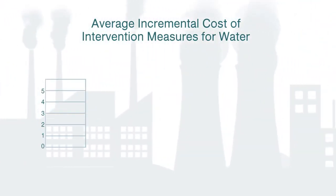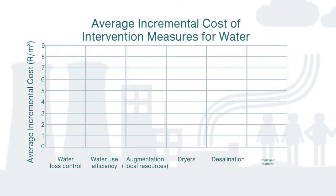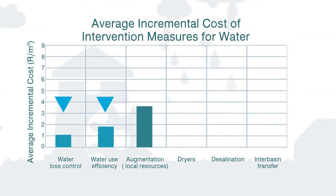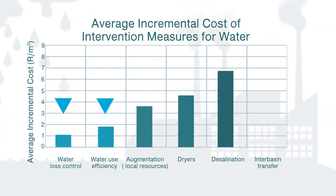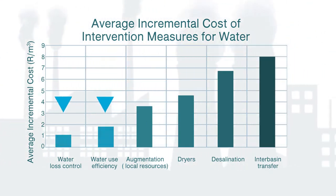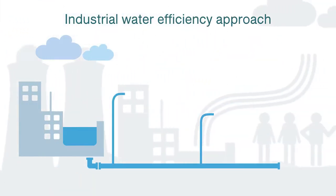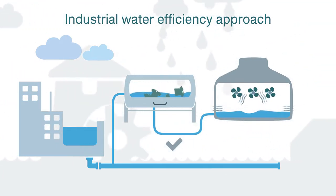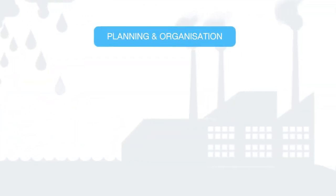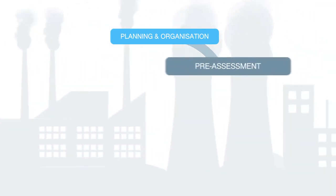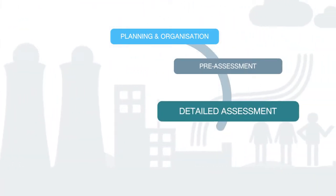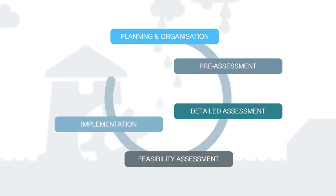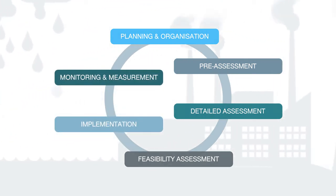When considering options for addressing intervention measures, apart from minimisation of losses, water efficiency offers the lowest cost and quickest turnaround solution to industry. The industrial water efficiency approach follows the same six stages of a RECP assessment, namely: planning and organising, pre-assessment, detailed assessment, feasibility assessment, implementation, and finally monitoring and measurement.